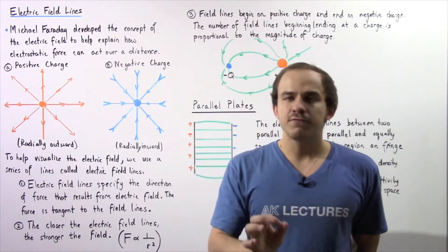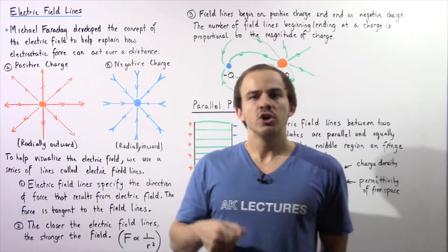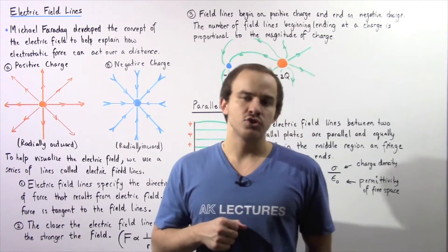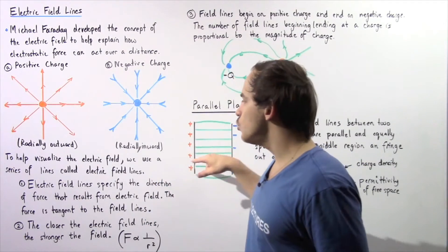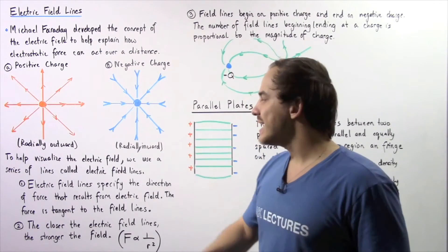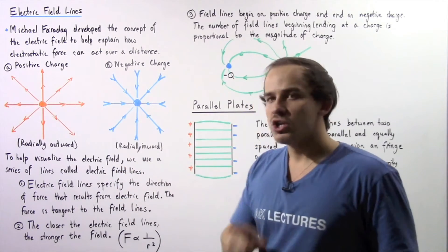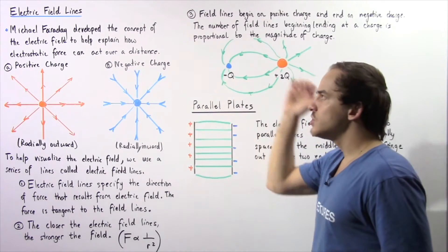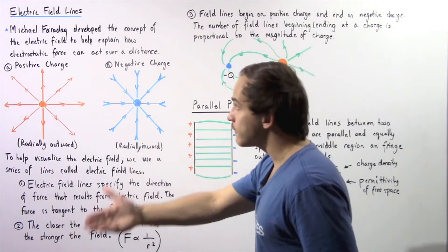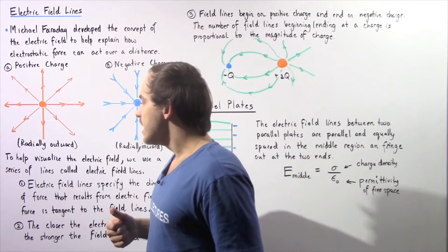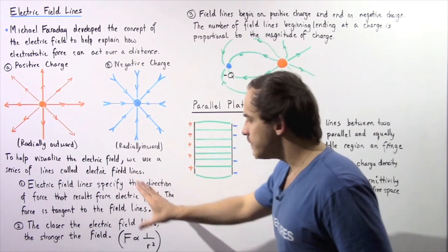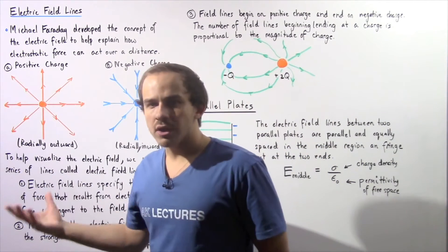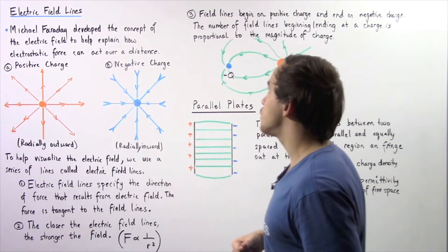Faraday said that every single electric charge creates an electric field. To help us visualize this electric field on paper, we use a series of lines known as electric field lines. Michael Faraday developed the concept of the electric field to help explain how electrostatic force can act over a distance. Let's look at three facts about electric field lines, which essentially describe the electric field created by charges.